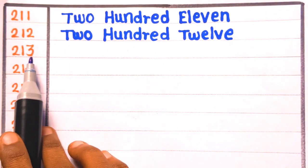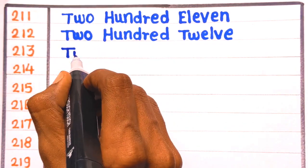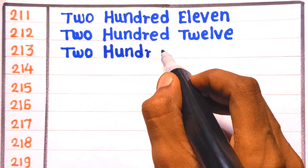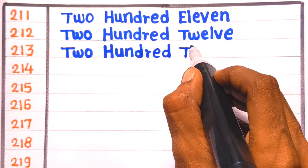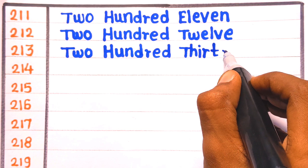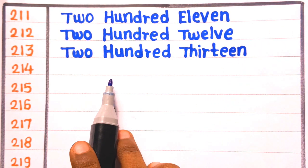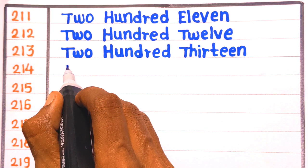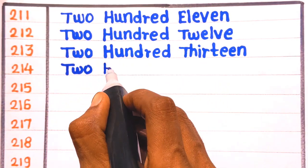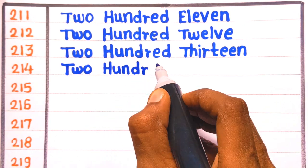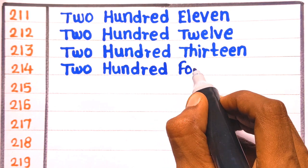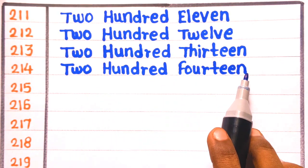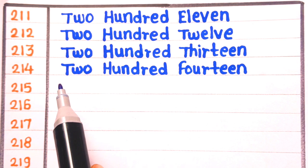Next is 213. Two hundred thirteen. T-W-O, two, H-U-N-D-R-E-D, hundred, T-H-I-R-T-E-E-N, thirteen. Two hundred thirteen. Next is 214. Two hundred fourteen. T-W-O, two, H-U-N-D-R-E-D, hundred, F-O-U-R-T-E-E-N, fourteen. Two hundred fourteen.